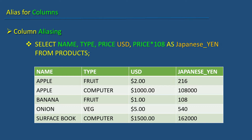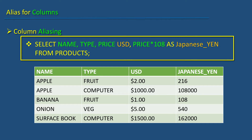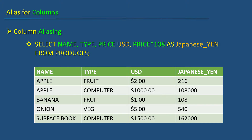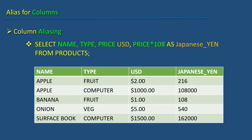Or you can use this statement: SELECT name, type, price USD, price times 108 AS Japanese_yen FROM products. Note that without the double quotes, everything is treated as uppercase and the alias needs to be a continuous single string — that's the reason an underscore is needed here. Also, the keyword AS is optional.